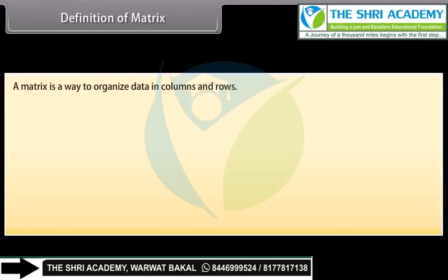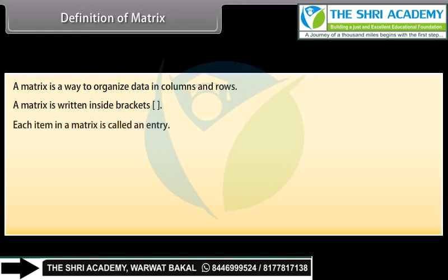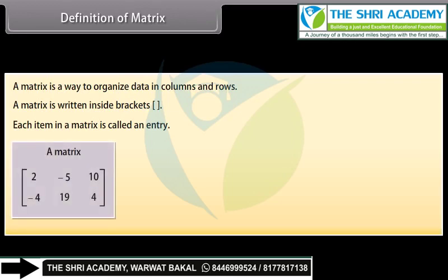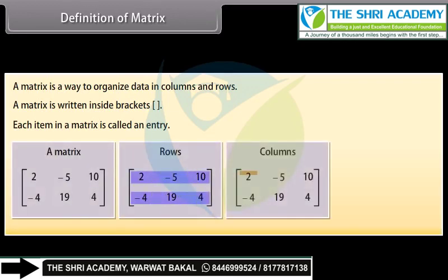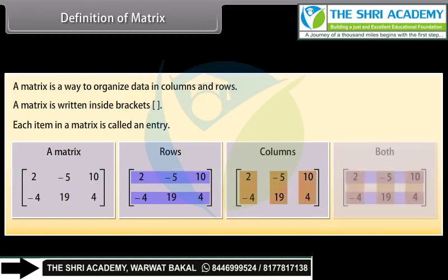Definition of matrix. A matrix is a way to organize data in columns and rows. A matrix is written inside brackets. Each item in a matrix is called an entry. Look at this matrix. It has two rows and three columns. The entries of the matrix below are 2, minus 5, 10, minus 4, 19, 4.